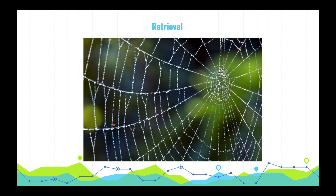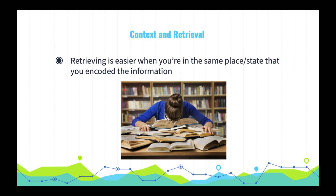When you encode information into memory, you associate it with other pieces of information — your seating position, your mood, your surroundings. These serve as retrieval cues, basically anchor points you can start from to ultimately access the information you want to retrieve. The more retrieval cues you have, the better your memory of the target information.